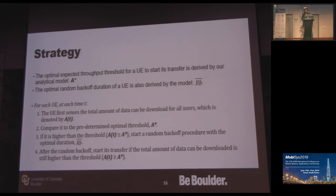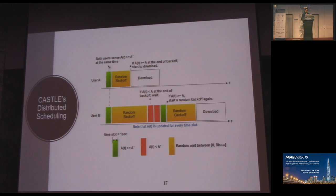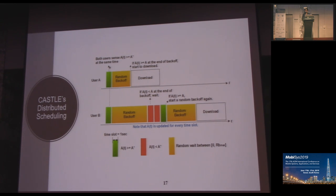The basic strategy is: at a given point in time, the UE measures the achievable throughput and checks if it exceeds the threshold favorable for the cellular condition. If so, it performs a random backoff; after the backoff, it re-checks the condition and then starts the download. As depicted in the figure, User A and User B both satisfy the condition but will not start the download process unless they complete the random backoff. The UE that loses the contention will not win the channel because the other UE has already started downloading.